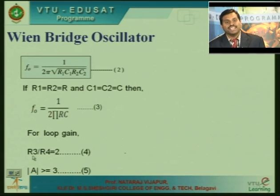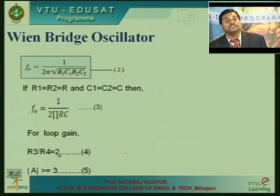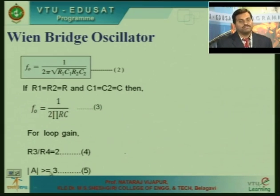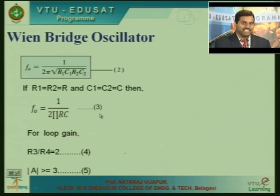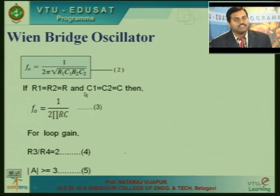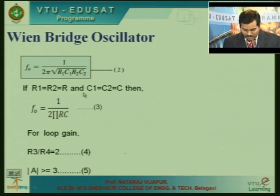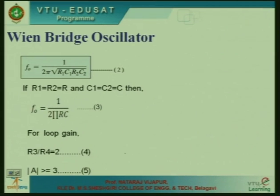To achieve a loop gain in the Wien bridge oscillator, the minimum value of R3/R4 should equal 2 and the closed loop gain of the op-amp should be greater than 3. If these conditions are satisfied, the oscillations will be sustained in the Wien bridge oscillator.